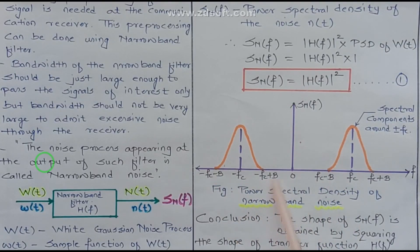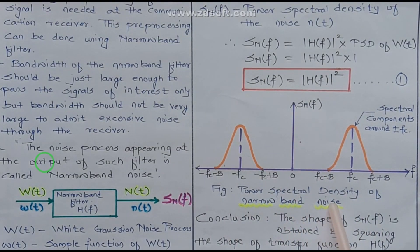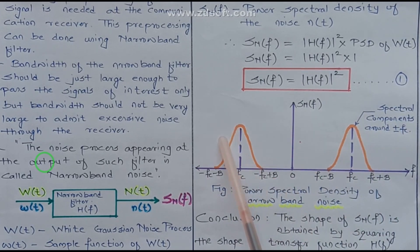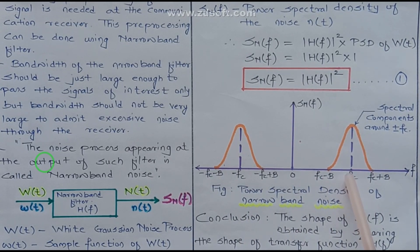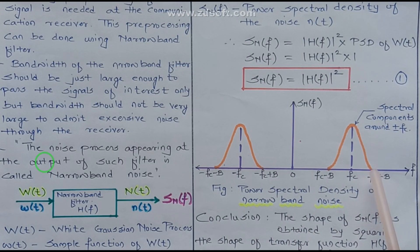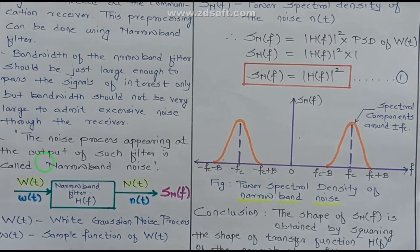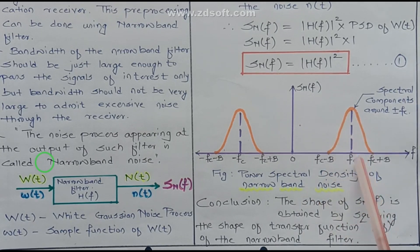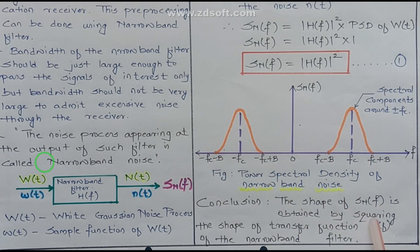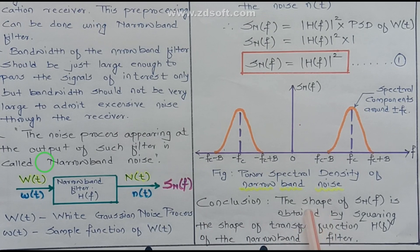This is the figure of the power spectral density of narrow band noise. The spectral components are found at plus fc and minus fc, which are the center or carrier frequencies. The bandwidth is from fc − B to fc + B, giving a total bandwidth of 2B, with a symmetric spectral component on the negative side. The conclusion is that the shape of this PSD is obtained by squaring the transfer function H(f) of the narrow band filter.